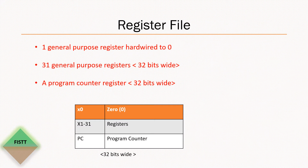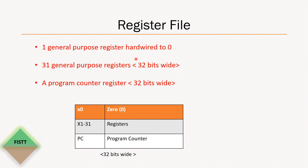Before we get into the instructions, we should know the register file in the RV32I core. As per the RISC-V spec, an RV32I core should have 33 registers, one of which is a program counter. The remaining 32 are general purpose registers, but one of those 32 is hardwired to zero — you cannot write anything into it and whenever you read it you just get zero. All these registers are 32 bits wide.